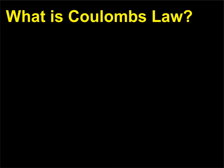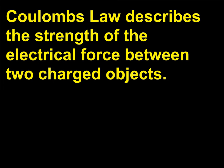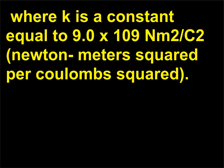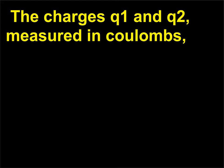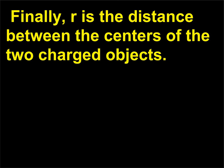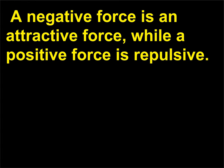What is Coulomb's Law? Coulomb's Law describes the strength of the electrical force between two charged objects. The formula is F = kQ₁Q₂/r², where k is a constant equal to 9.0 × 10⁹ N·m²/C². The charges Q₁ and Q₂, measured in coulombs, represent the charges on the objects that cause the force F, measured in newtons. R is the distance between the centers of the two charged objects. A negative force is an attractive force, while a positive force is repulsive.